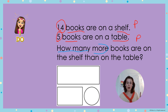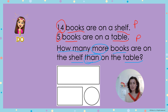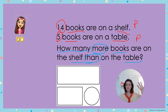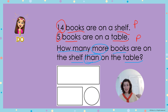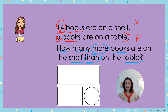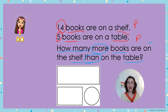My question is: how many more books are on the shelf than on the table? I've circled some important words there. I have 14 books on the shelf, 5 books on the table, and I need to find how many more books are on the shelf than on the table. In order to figure that out, I have to find the difference between the two — to see what makes them different — and in order to do that I need to subtract.